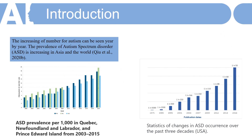Introduction to the presentation. The prevalence of autism spectrum disorder is increasing year by year, both in Asia and in the world. However, the cause of autism still cannot be identified until today. This paper will discuss general information about autism, including how to diagnose children, the importance of awareness, and treatments that could be used to help those with autism.